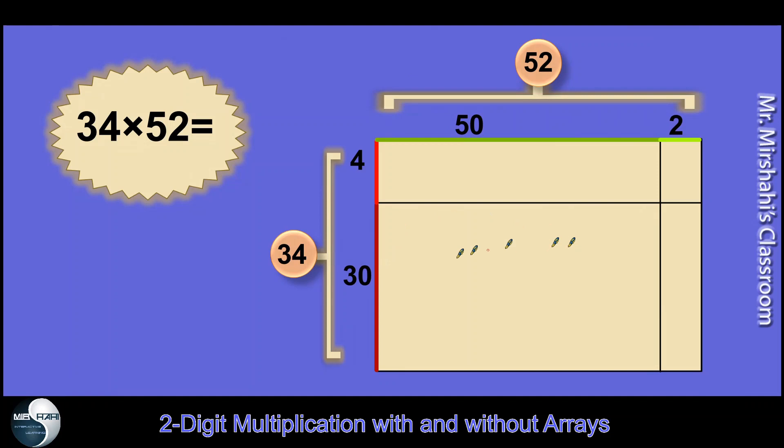So 30 times 50. So remember 30, 3 times 5 is 15, and I have 2 zeros. I can do that. And 4 times 50 is 200. And here we have 2. I have 30 here and I have 2 there. So that's 60. And I have 2 times 4 here, which is 8.